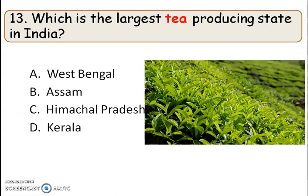The next question: which is the largest tea producing state in India? The right answer is option B, Assam. India's total tea production — more than 50% comes from Assam. A detailed video on tea with general knowledge questions important for competitive and agriculture development officer exams has already been uploaded; the link is in the description box. Assam is the largest tea producing state in India.